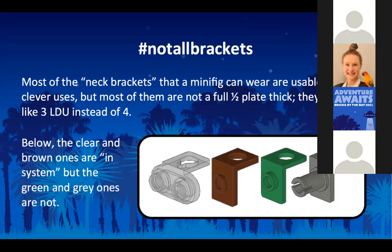Not all brackets can do this. The brown newer bracket has a vertical thickness closer to a normal half plate, whereas the green one is a little narrower. The clear one is like a one-by-two plate attached to the bracket. But the old-school green and darker gray ones are not actually compatible with that sort of attachment because they are a little bit narrower than four LDU — more like three. So you'll have a hard time getting those to fill in a gap, and the stud spacing doesn't quite fit the alignment you might expect.